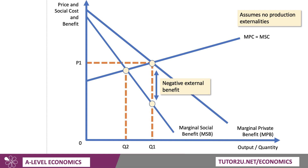From society's point of view, we would prefer output — or consumption — to be lower, where social cost meets social benefit. So Q2 is the social optimum and Q1 is the private optimum. In this case, there's overconsumption of these products. Some economists call them demerit goods. Output is too high from a social welfare point of view; we'd want output to be lower at a price that reflects the impact on society.